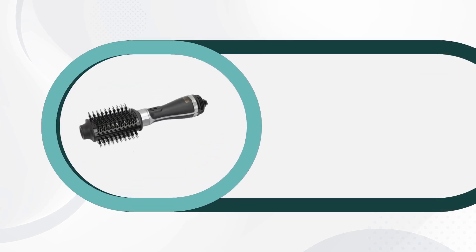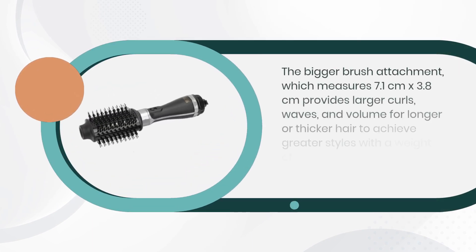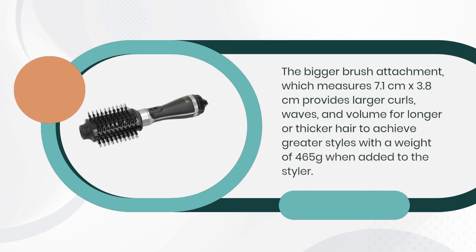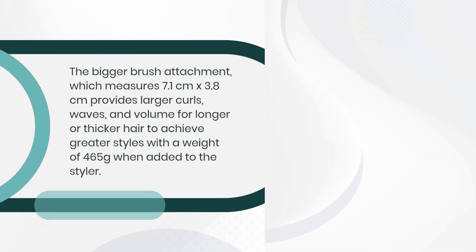The bigger brush attachment, which measures 7.1cm x 3.8cm provides larger curls, waves, and volume for longer or thicker hair to achieve greater styles with a weight of 465g when added to the styler.